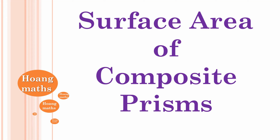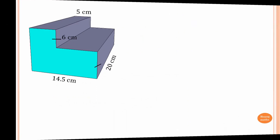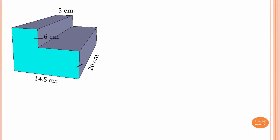Please download the PDF file in the description below, or print it out so you can work with me. First, we need to find the surface area of this prism, starting with the area of the front.